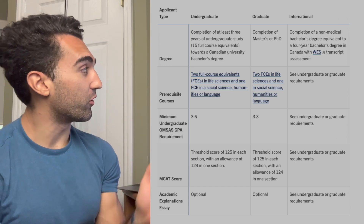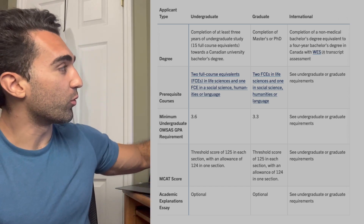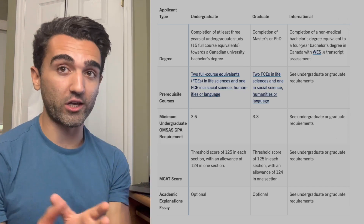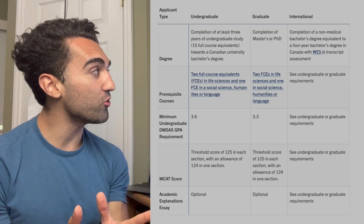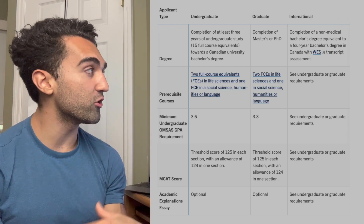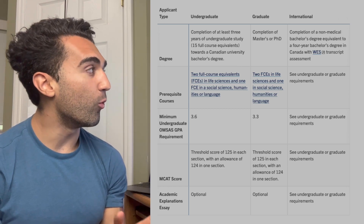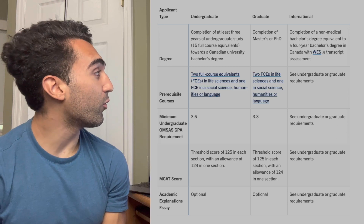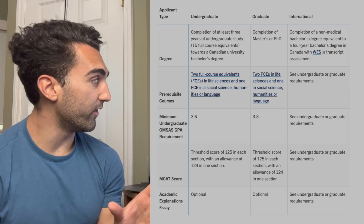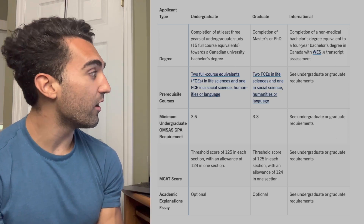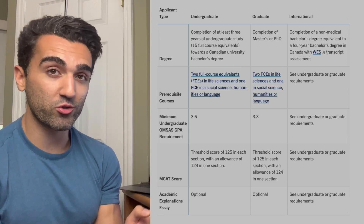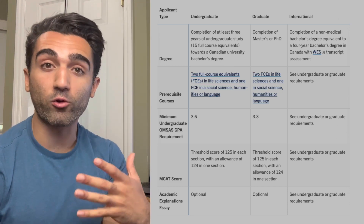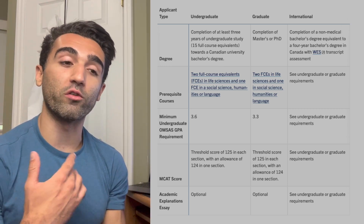For undergrads, they have a chart on their website you can review. If you are a graduate student, you need at least a master's or a PhD to fall into the graduate category. For the international category, you need to complete a non-medical bachelor's degree equivalent to a four-year Canadian bachelor's degree with the WES transcript assessment. When it comes to prerequisite courses, undergrad applicants need two full course equivalents in life sciences and one full course equivalent in social science, humanities, or language — the same for graduate and international students. Make sure to check their website to confirm your courses meet those requirements.